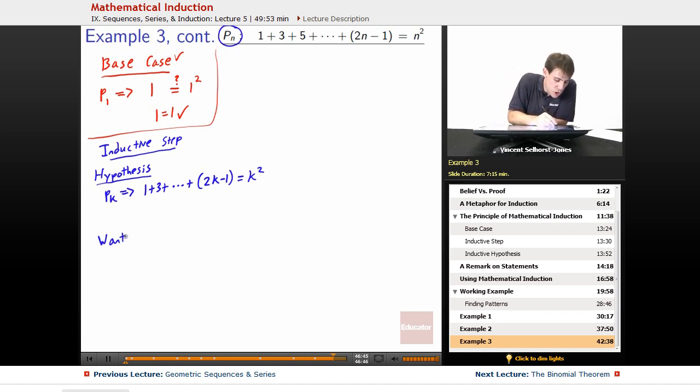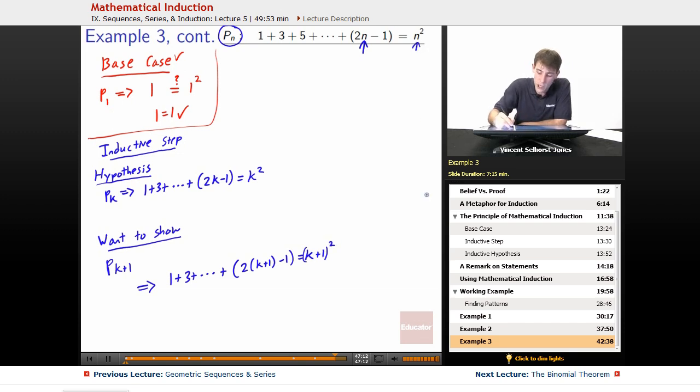So now we want to show that P(k+1) is true. So showing k plus 1 is true is going to be equivalent to showing that 1 plus 3 plus dot, dot, dot, plus 2 times (k+1) minus 1 equals (k+1) squared. Now remember, we want to have our hypothesis show up somewhere. We have to get our hypothesis to show up somewhere, so we realize, oh hey,